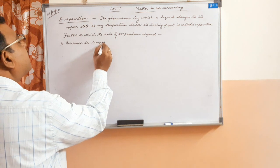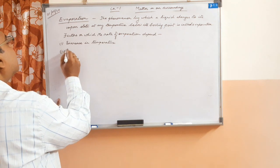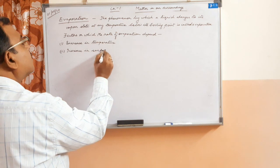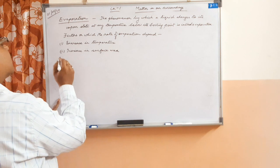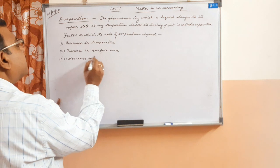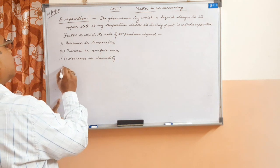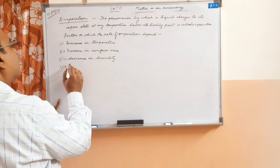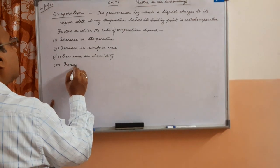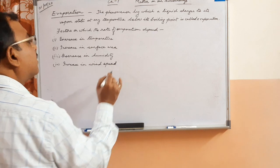The factors affecting the rate of evaporation are: first, increase in temperature; second, increase in surface area; third, decrease in humidity; and fourth, increase in wind speed.